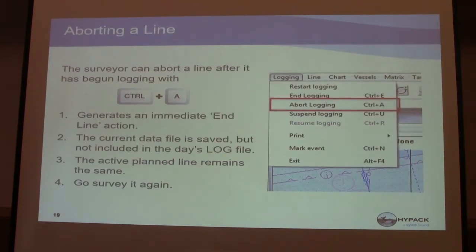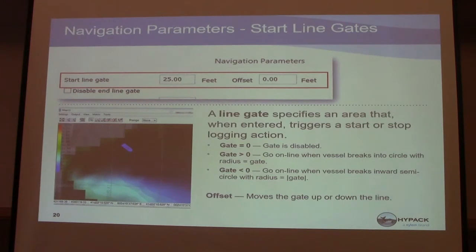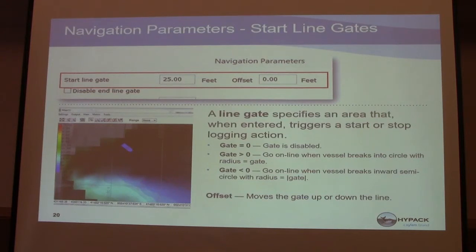The surveyor can abort a line after it has begun with Control-A. It generates an immediate at-line action. The current data is saved but not included in the day's log file. The active planned line remains the same and you can go back and survey it again. A line gate specifies an area that, when entered, triggers a start or stop logging action. So if you're surveying heading north and the planned line ends, 25 feet past it will automatically stop logging. Turn around, switch directions, go south through that gate, and it will begin logging.